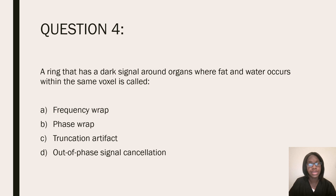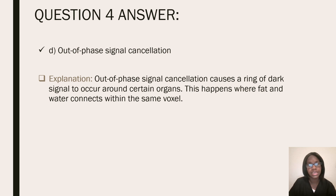Question four: a ring that has a dark signal around organs where fat and water occurs within the same voxel is called? Is it frequency wrap, phase wrap, truncation artifact, or out of phase signal cancellation? Out of phase signal cancellation causes a ring of dark signal to occur around certain organs. This happens where fat and water connect within the same voxel.